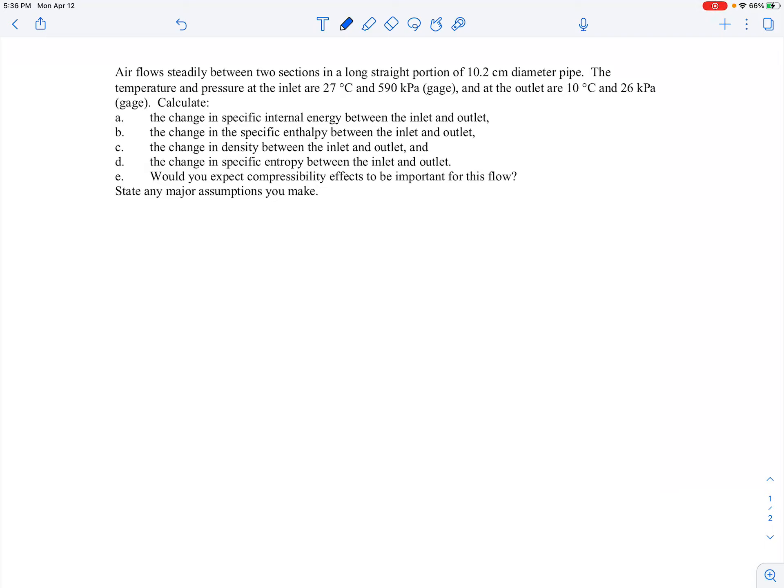In this example, we're told we have air flowing steadily between two sections in a long straight portion of 10.2 centimeter diameter pipe. So we have a pipe like this, call that section 1 and call this section 2, air is flowing that way.